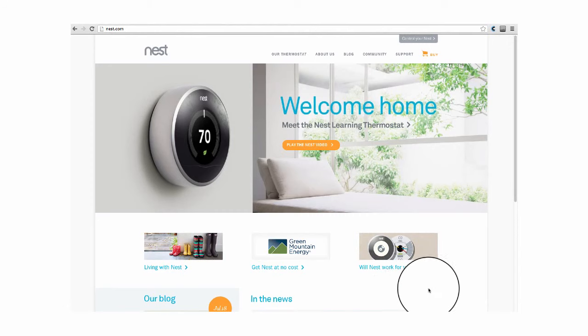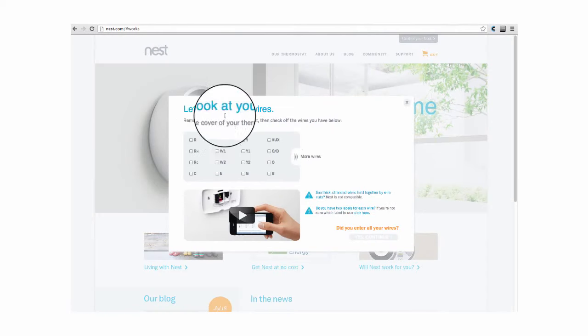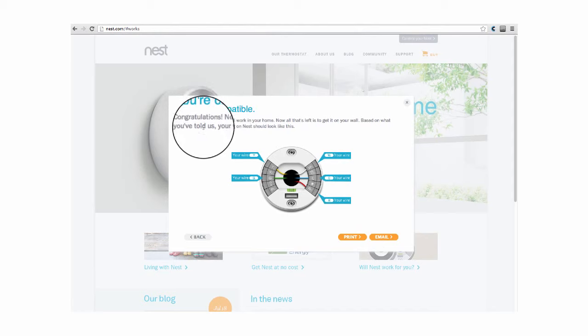So before you do anything, you want to go to the Nest website, nest.com, and then go down here and click on Will the Nest Work for You? What it does is bring up a wiring option here. So it says remove the cover of your thermostat and check off the wires that you have below. So in my case, I have an R, a W, a Y, a C, and a G. And you can go to more wires here, but if these are all the wires that you have, you just click on Yes, Continue. And it says, you're compatible. Congratulations. And then it shows you where to put all the corresponding wires, which is way cool. So this is how you would want to wire the base plate of the Nest based on the wires that you have in your existing thermostat. It's that simple.